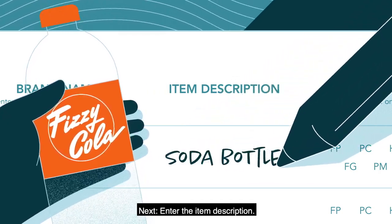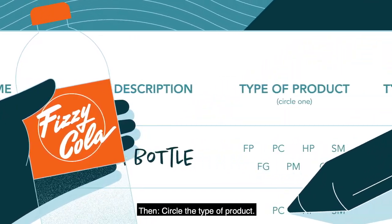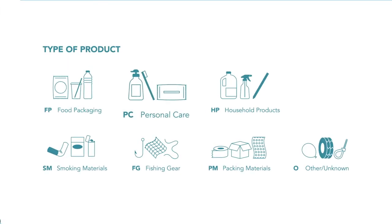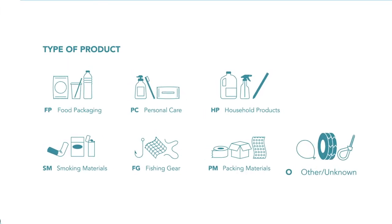Next, enter the item description. Then, circle the type of product. Check out the key on the bottom left of the data card for the appropriate abbreviations.